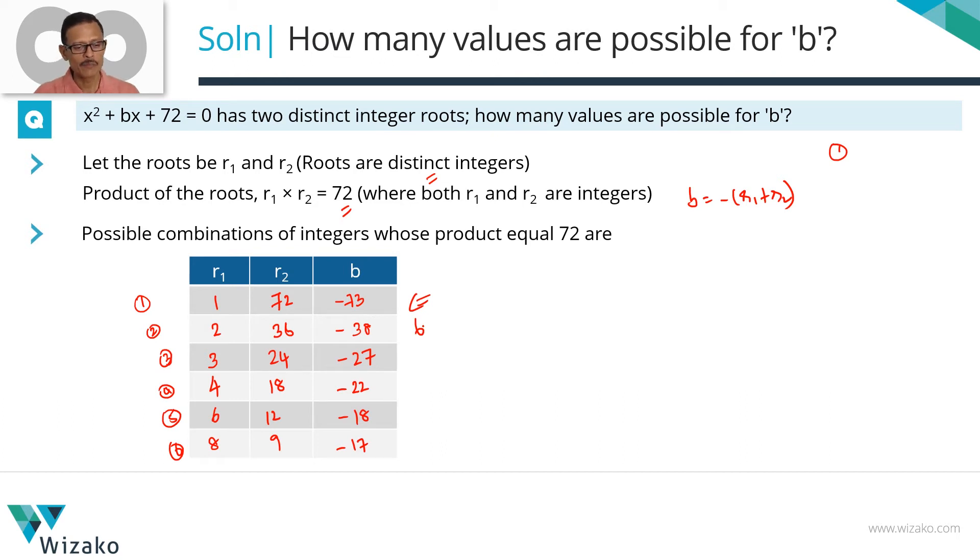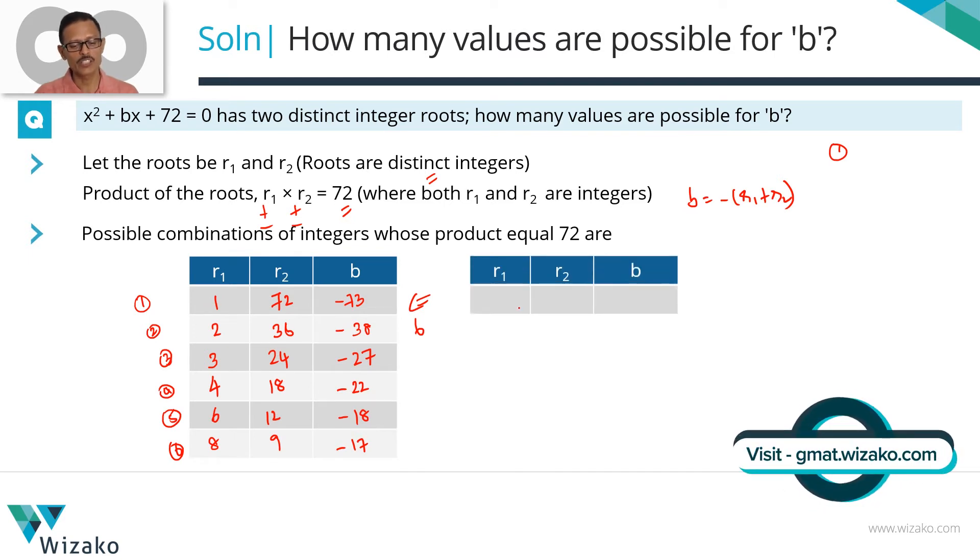But hold on. Product of two numbers is a positive value, which is 72. If the product equals 72, it could happen for both r1 and r2 being positive. Product of two positive numbers is positive. Product of two negative numbers is also positive. For each of these positive combinations you have taken, there is a possible negative one. r1 could be minus 1, r2 could be minus 72. The product still is plus 72. The sum is going to equal minus 73. Therefore, the value of b will equal 73. We found six values here. We will find six values with the sign being positive.